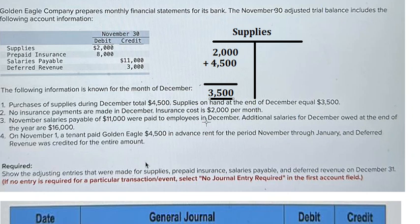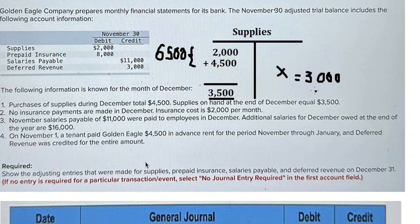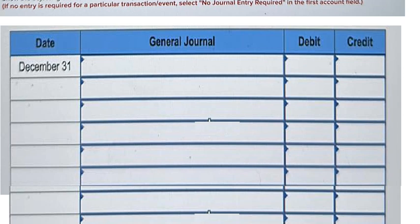So we need to find the supply on credit so that we can minus the value on the debit and get 3500 at the end. We sum the two numbers together and get 6500 — 2000 plus 4500. Then we minus this number and we get 3000, because 6500 minus 3000 gives us 3500 at the end.